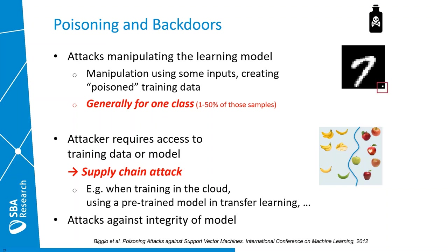The attacker needs to embed a certain distinct pattern in the data — one that may be noticeable but not suspicious. For this attack to work, the attacker requires access to either the training data or the model at some point in the supply chain. This could happen when training in the cloud, where it may be possible to manipulate training data. Another attack vector is reusing a pre-trained model in a transfer learning setting, where an already-embedded backdoor might survive quite a bit of model fine-tuning done afterwards.